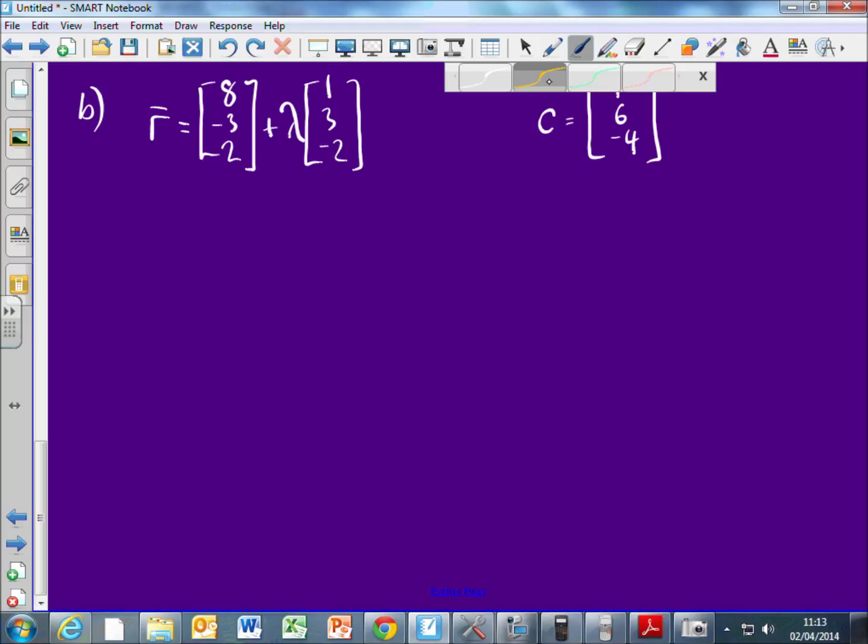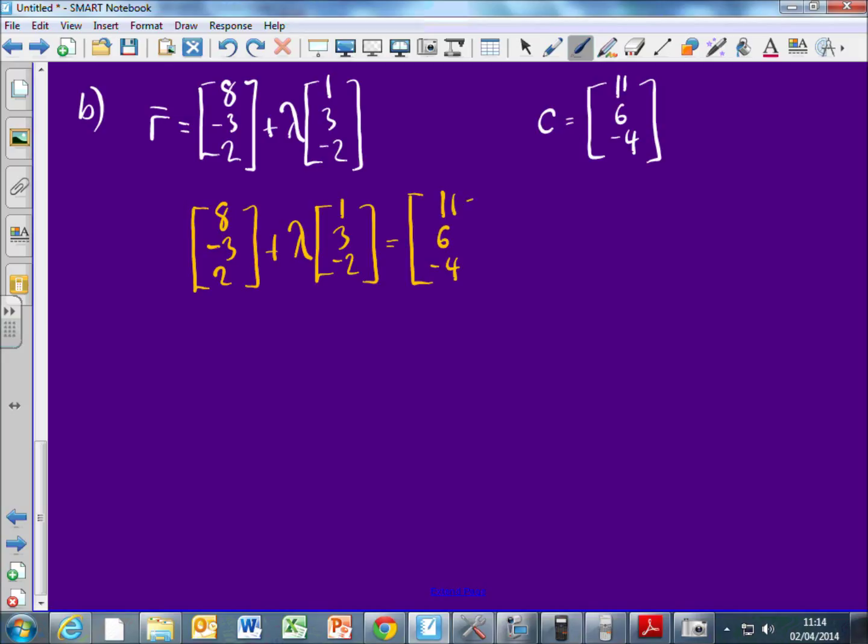So I get 8, negative 3, 2, plus lambda, 1, 3, negative 2, it's got to be equal to 11, 6, negative 4. So what do I do then? Yeah. So you're doing the X component, the Y component separately. So we should have 8 plus lambda equals 11. Minus 3 plus 3 lambda equals 6. 2 minus 2 lambda equals negative 4.